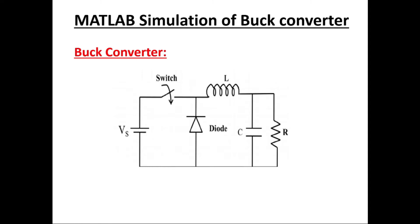For this converter we need a control power electronic switch, a diode, an inductor, a capacitor, and a load. For the control power electronic switch we can use a MOSFET or IGBT. For the controlling action, with the help of duty cycle we are controlling the switch — by varying the duty cycle we can control voltage levels at the load side.